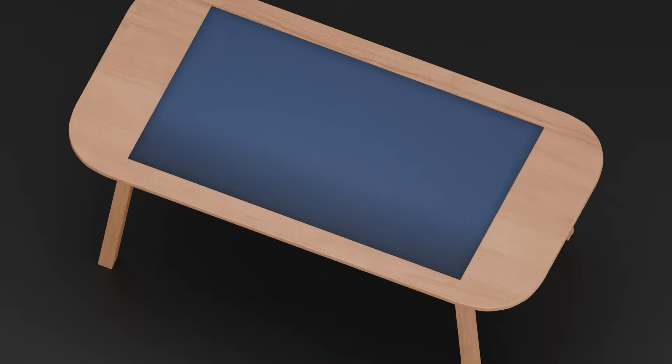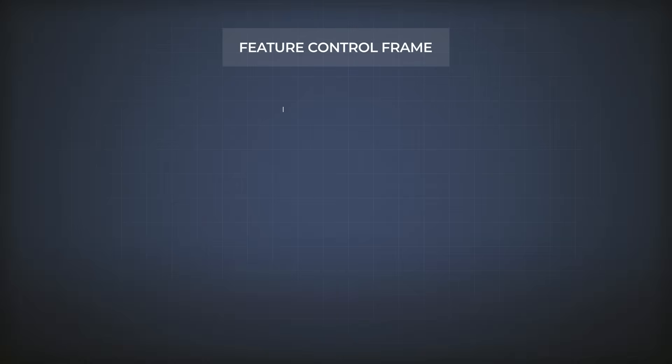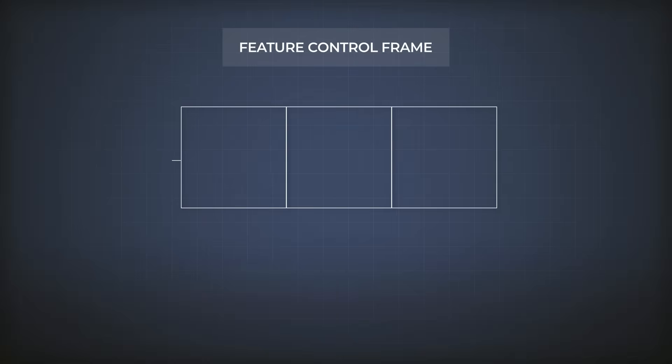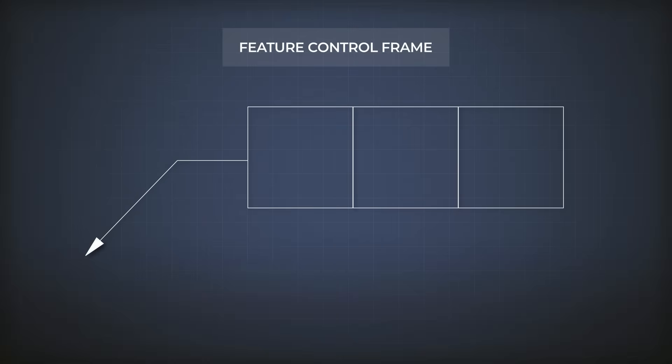Our most important component is the feature control frame. It consists of two or three fields and an arrow. The arrow is also called the leader.